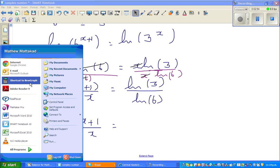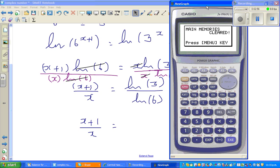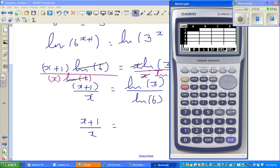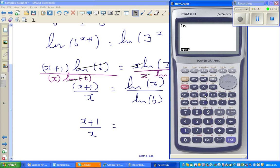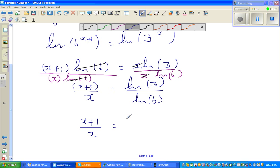Let me get a calculator out. Natural log of 3 divided by natural log of 6 equals 0.61315. I'll remember that: 0.61315.